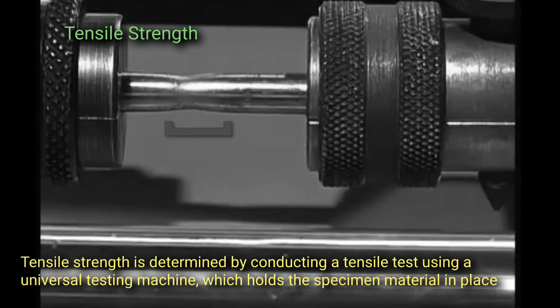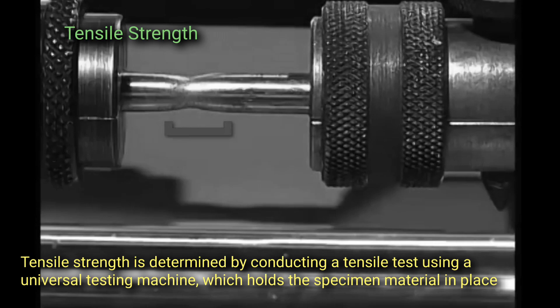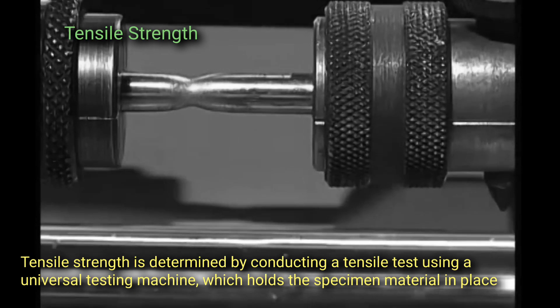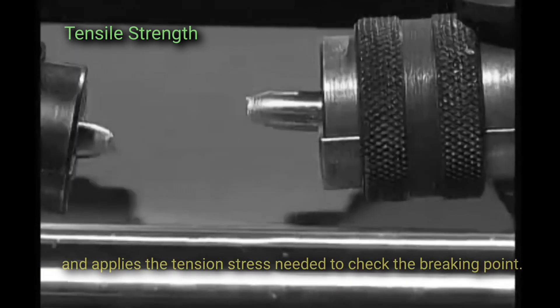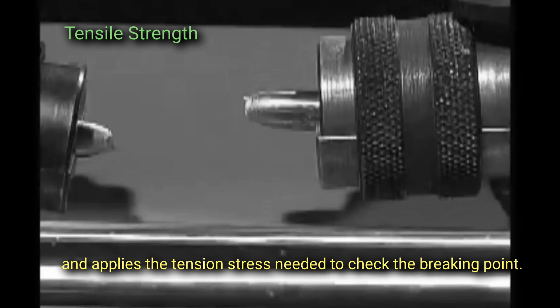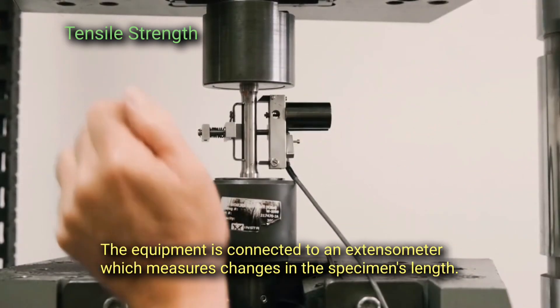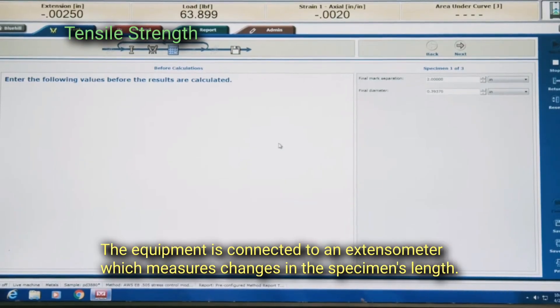Tensile strength is determined by conducting a tensile test using a universal testing machine, which holds the specimen material in place and applies the tension stress needed to check the breaking point. The equipment is connected to an extensometer which measures changes in the specimen's length.